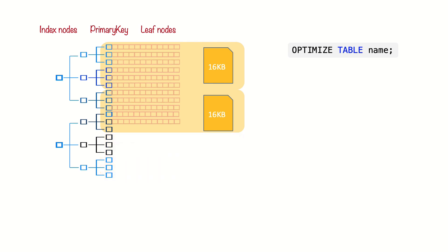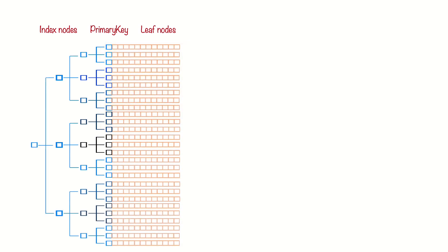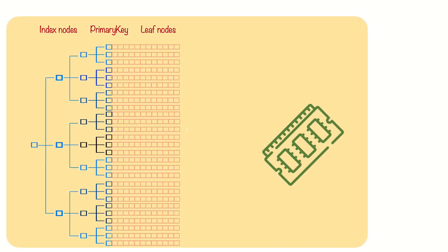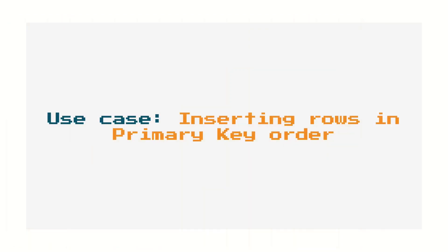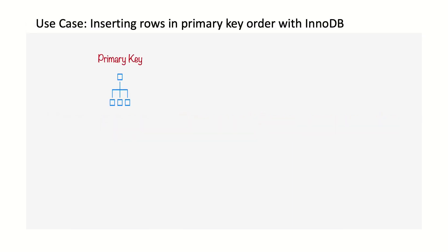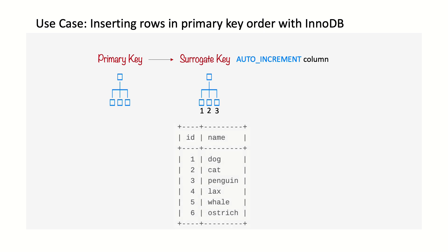Keep in mind that clustering gives the largest improvement for I/O-bound workloads. If the data fits into memory, the order in which it's accessed doesn't really matter, so clustering doesn't give much benefit in this case. If you are using InnoDB and you don't need any particular clustering, it can be a good idea to define a surrogate key, which is a primary key whose values are not derived from your application data. The easiest way to do this is usually with an auto-increment column. This will ensure that rows are inserted in sequential order and will offer better performance for joins using the primary keys. It's best to avoid random or non-sequential clustering keys, especially for I/O-bound workloads.